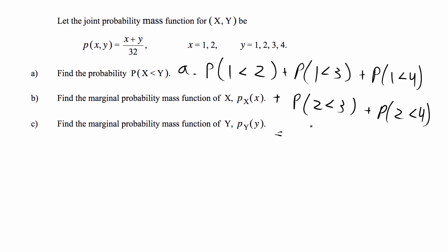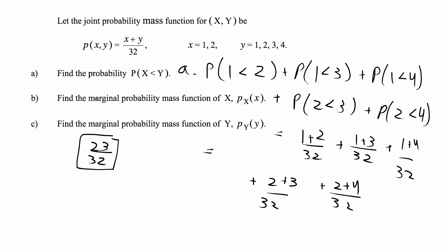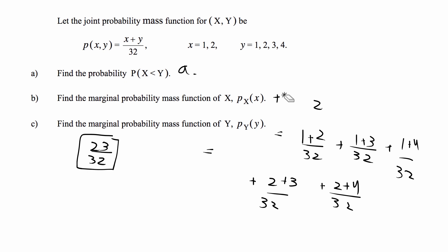Plugging into the PMF, which is (x + y)/32, we get: (1+2)/32 + (1+3)/32 + (1+4)/32 + (2+3)/32 + (2+4)/32, all over 32. Adding those up gives us the total probability that x is less than y. That's the solution for part A.